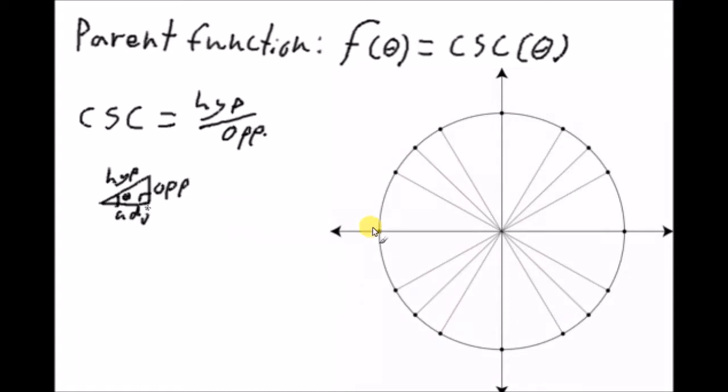So the first thing that we're going to want to find is the asymptotes related to this function. Where will this function not be able to be seen, or where will it not be able to equal a number? That will always happen when there is any kind of number over zero, because we can't divide by zero. Imagine having one apple to divide among zero people. It just doesn't work.